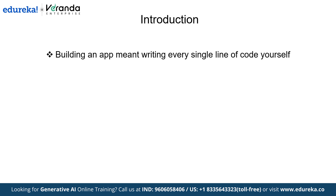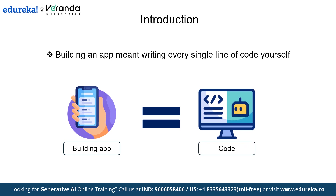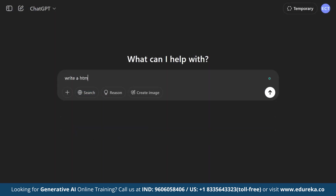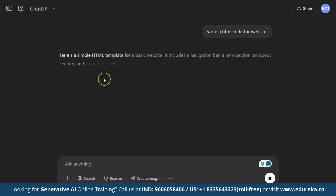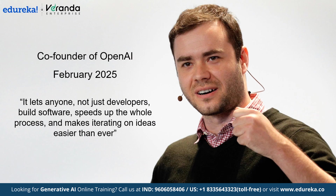Software is changing fast. Just a few years ago, building an app meant writing every single line of code by yourself. But today, we don't even need to look at the code to create an app — this is what we call Vibe Coding. The term Vibe Coding was introduced by Andrei Karpathy, a co-founder of OpenAI, in 2025. According to him, it lets anyone — not just developers — build software, speed up the whole process, and makes iterating on ideas easier than ever. But is Vibe Coding the future or just another passing trend? Comment your thoughts below.